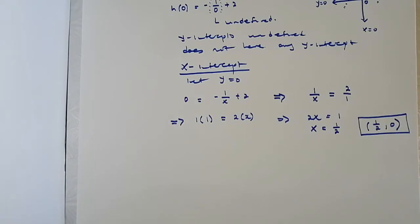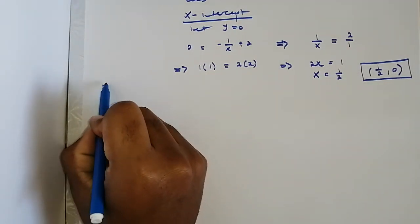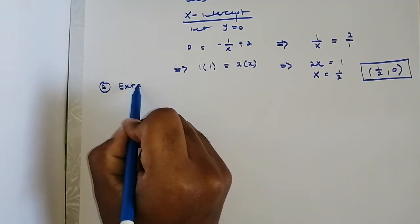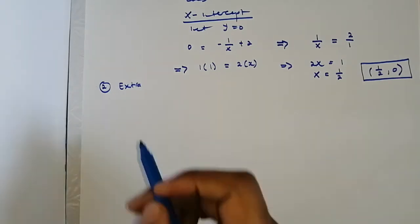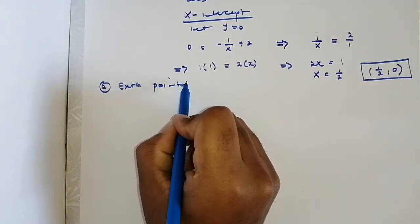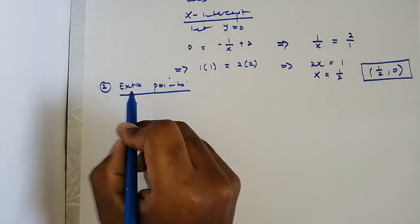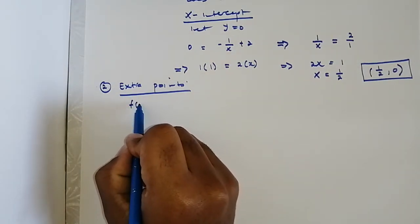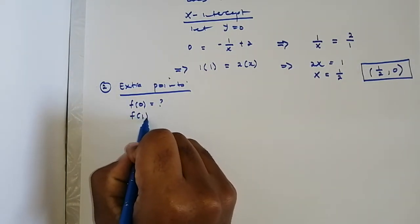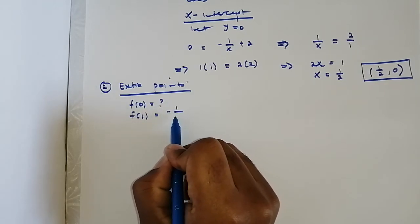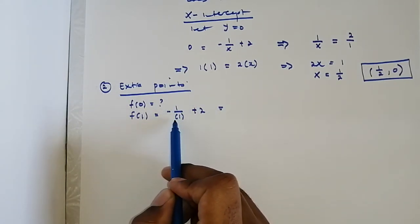You might be asked to find extra points so you can sketch your graph with a higher degree of accuracy. If you are not asked, you can ignore them. For example, f(0) is undefined. f(1) equals negative one divided by one plus two, which is negative one divided by three.